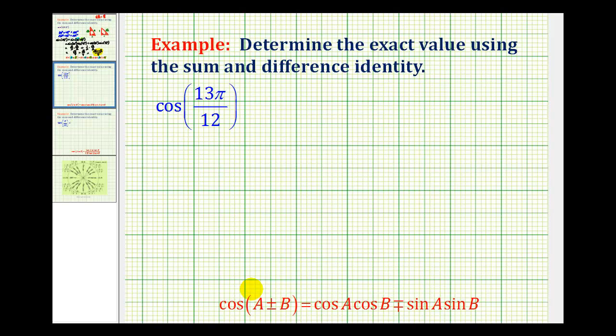In this example, we want to use the sum and difference identity for cosine to determine the exact trig function value of cosine 13π over 12 radians.